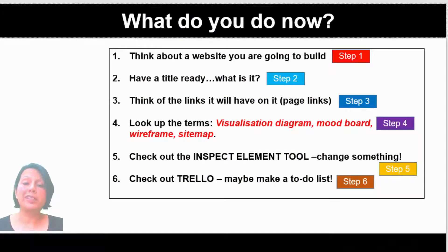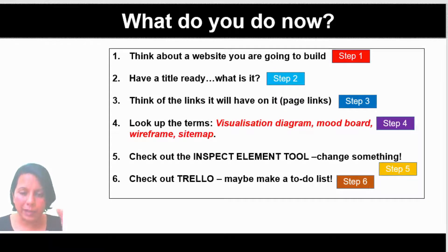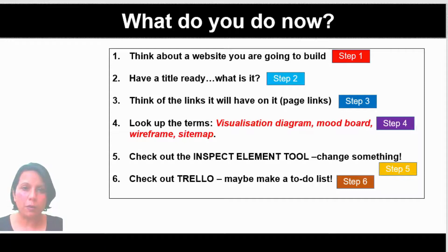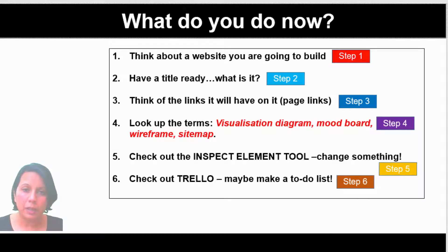Here are six steps to help you get started. Think about your website — what's it going to be, what's it going to be for? Have a title ready. Think about the links, which gives you a sense of the structure — a homepage, a contact page, a games page — and that will form your navigation bar. Look up these important web design and planning terms: visualization diagrams, mood boards, wireframes, and sitemaps. Check out the Inspect Element tool and explore different elements on a website. And you might want to check out Trello and make your own to-do list — it's completely free.